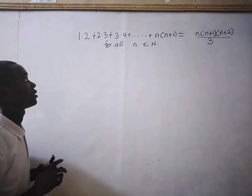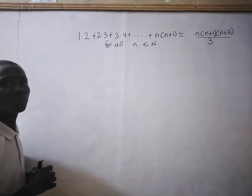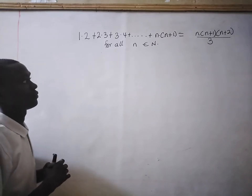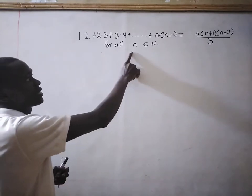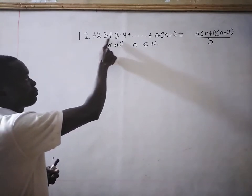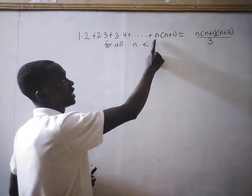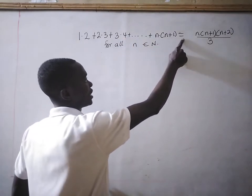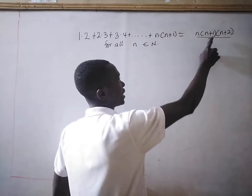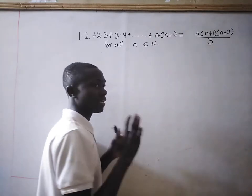Now let's look at the question. Prove, using the principle of mathematical induction, that for all numbers, subset of natural numbers: 1×2 + 2×3 + 3×4 + ... up to n×(n+1) is equal to n×(n+1)×(n+2) all divided by 3.